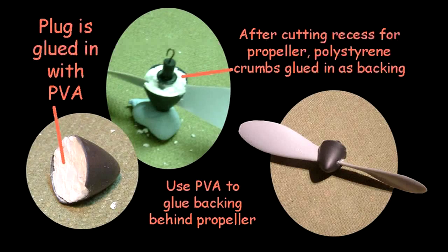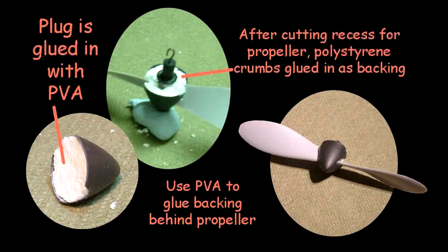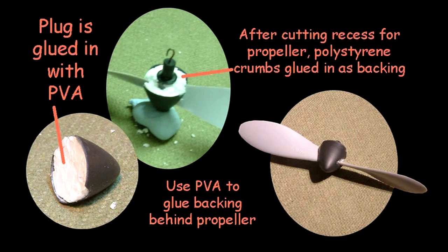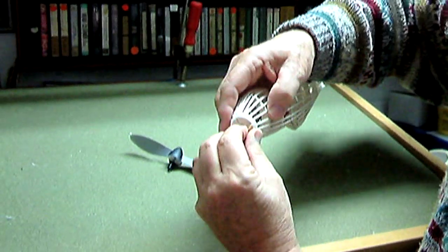I decided to use a roughly carved piece of polystyrene which I glued into the spinner using PVA adhesive. You cannot use balsa cement for this as it will dissolve the polystyrene.